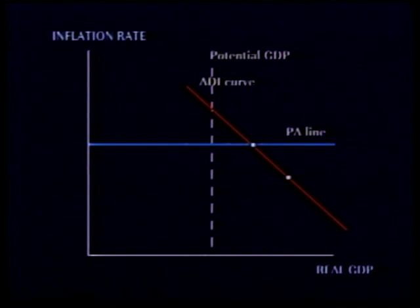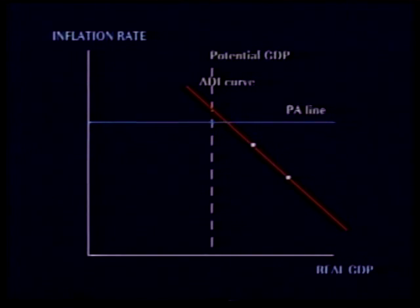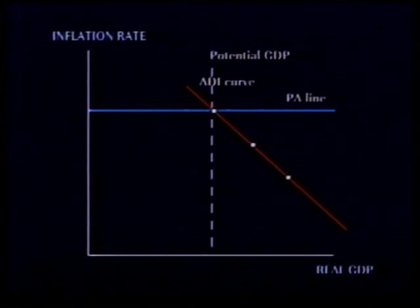At the same time, the monetary policy rule tells us that interest rates will begin to rise as the Fed responds to higher inflation. For now, real GDP remains greater than potential GDP, so inflation continues to rise. Eventually, the Fed's increase in interest rates succeeds in returning real GDP to the level of potential GDP.